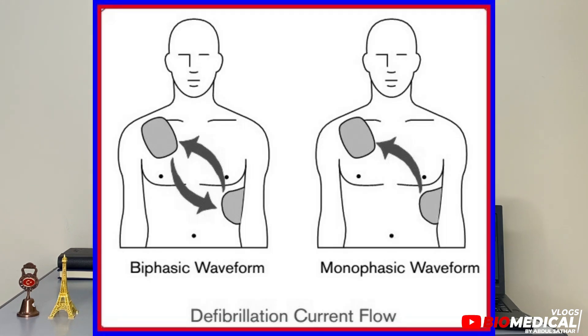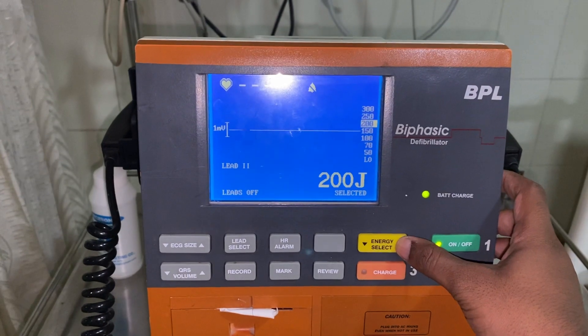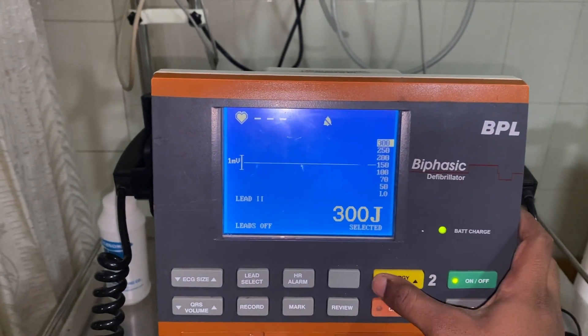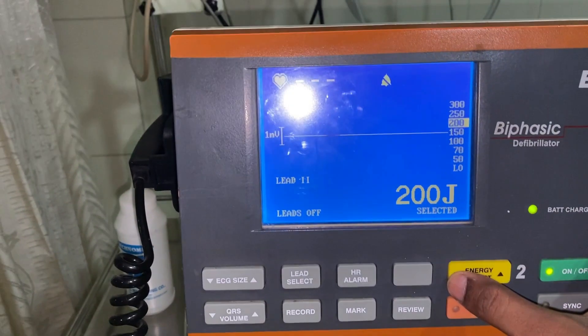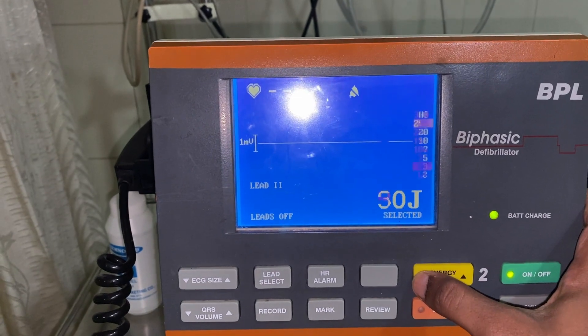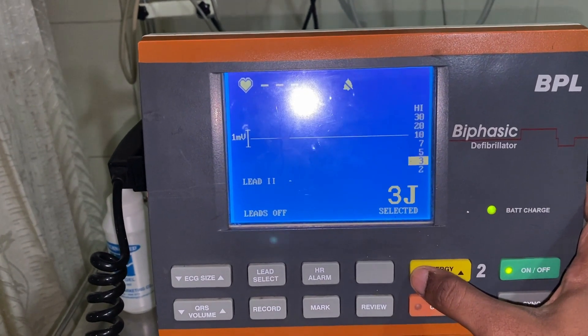There are two types of defibrillators based on the waveform used: monophasic and biphasic. In a monophasic defibrillator, the electrical current is sent in a single direction — the shock travels from one electrode to the other. In a biphasic defibrillator, the shock is delivered in both directions. Compared to monophasic, biphasic achieves the same effect with a lower number of joules and is therefore more effective while requiring less energy.